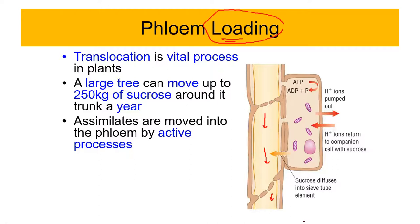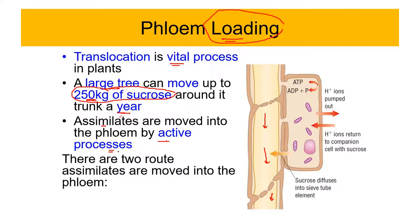Translocation is a vital process — plants need these nutrients and assimilates for survival. A large tree can move up to 250 kg of sucrose around it in a year. Assimilates are moved into phloem by active processes, so energy is required. There are two routes: the symplast route and the apoplast route. We have already discussed these in the context of xylem.